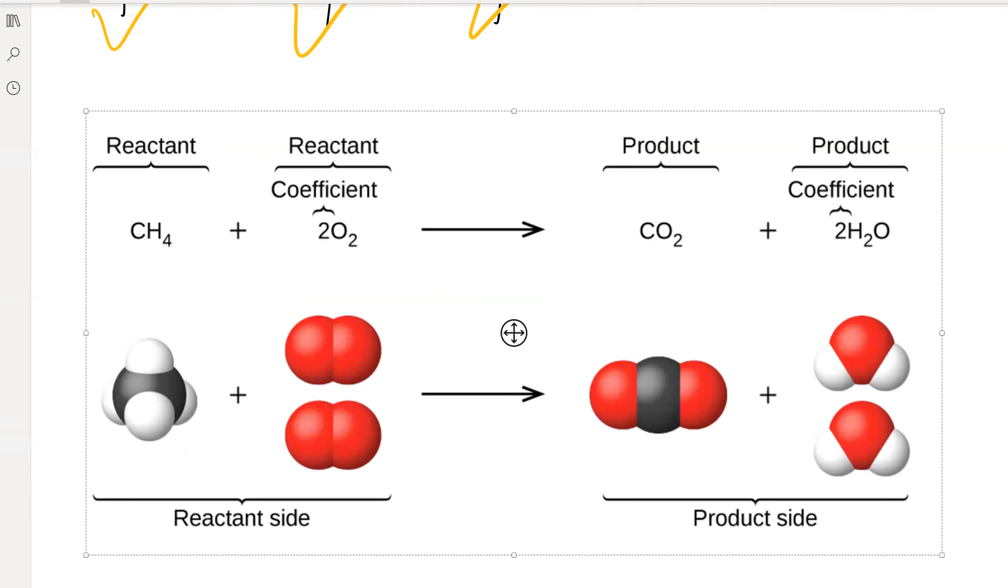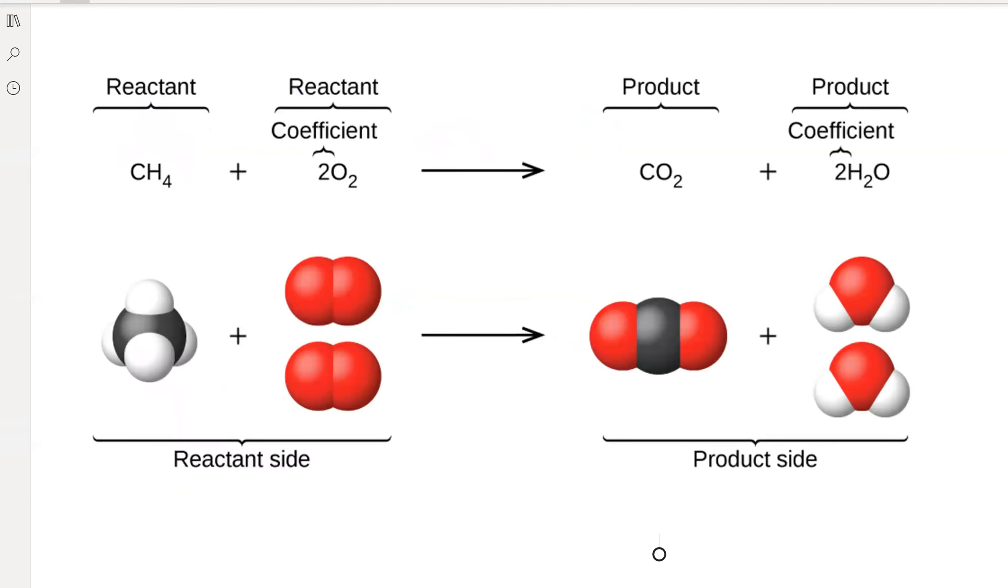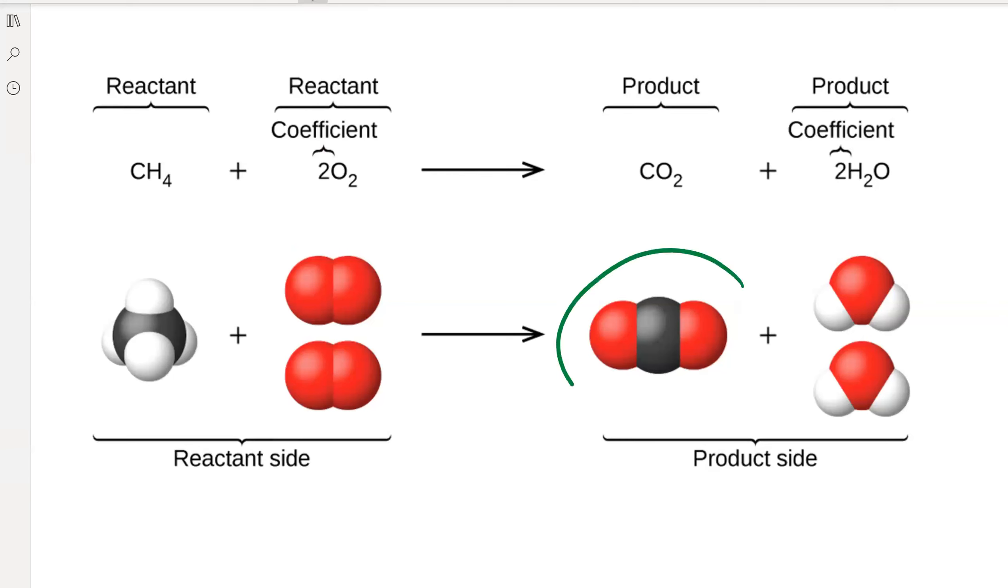And then here's just a pictorial representation of the same thing. You can see we have one molecule of methane, CH4, reacting with two molecules of O2 to form one CO2 and then two waters. And then if you count up the amount of atoms on each side, they're the same. And that always has to be true—our equations always need to be balanced.